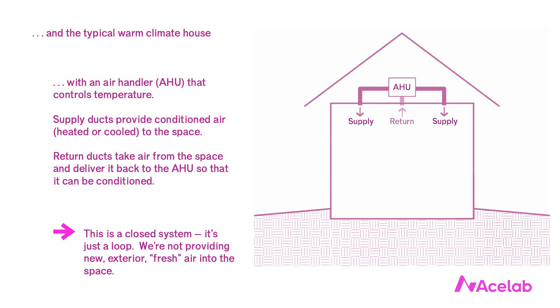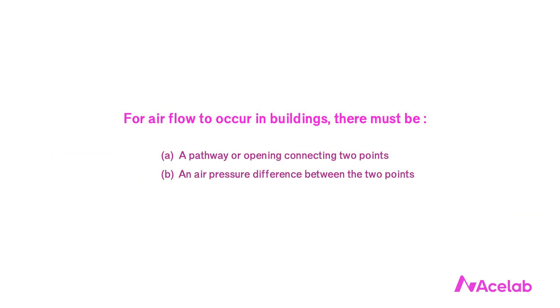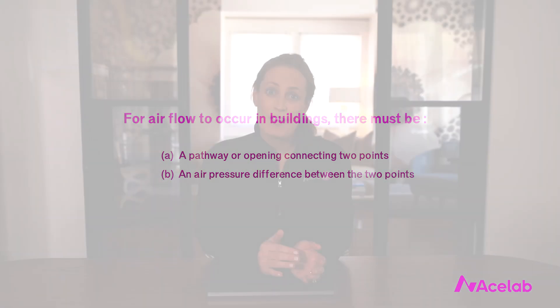Obviously, exterior air gets inside our houses somehow, and this happens a few different ways. For airflow to occur between two points, there must be both a pathway or opening connecting those two points and an air pressure difference. Both of these conditions must exist. If we have a pathway but no pressure difference, we won't have airflow, and if we have a pressure difference but no pathway, we won't have airflow either.